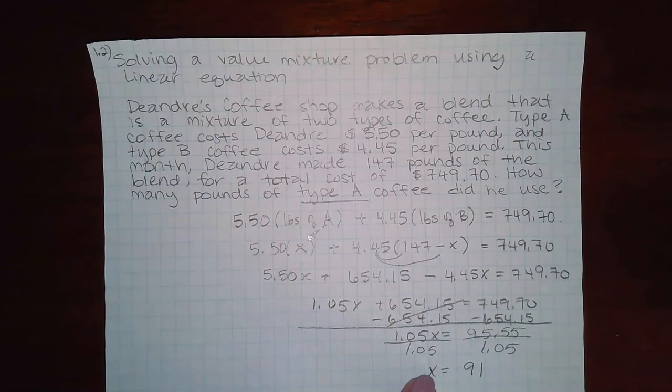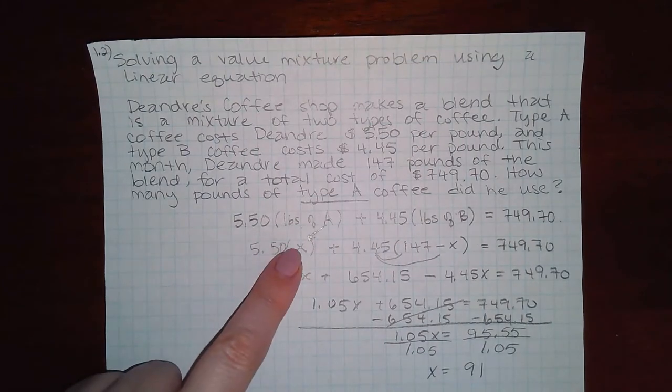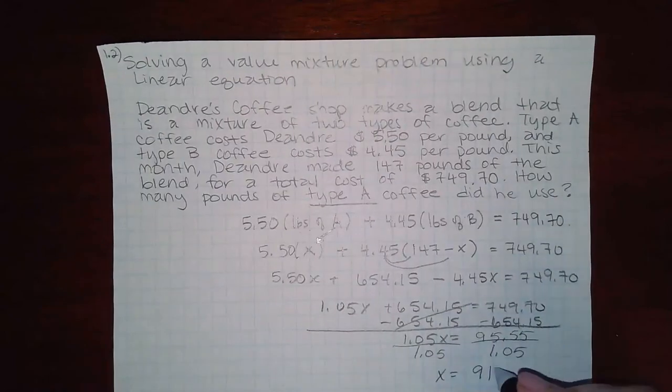So X equals 91. And since X was the amount of pounds for type A, we have found the answer.